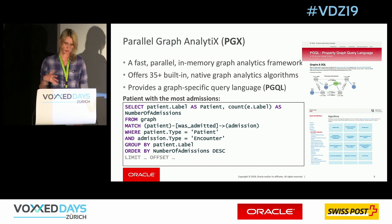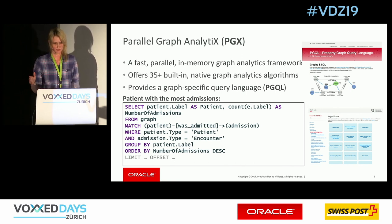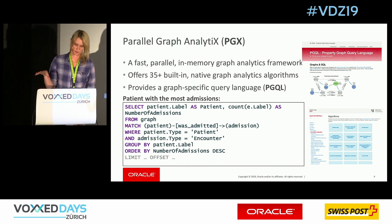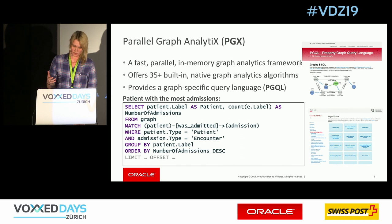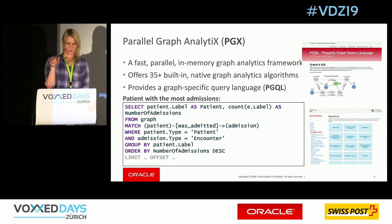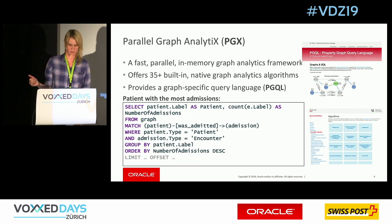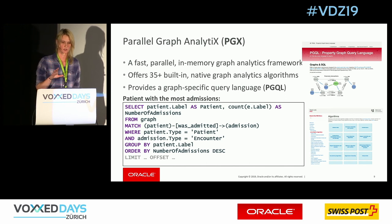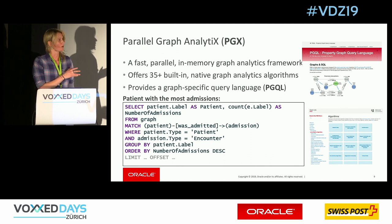The other thing is the query language. When querying a relational database, we have a query language for our graph data called PGQL. For example, looking at our graph model where a patient was admitted to a hospital and we want to find the patient with the most admissions — we can write a query with constructs similar to SQL: SELECT, FROM, WHERE, GROUP BY, ORDER BY, LIMIT and OFFSET, plus a MATCH clause with parentheses for vertices and edges.